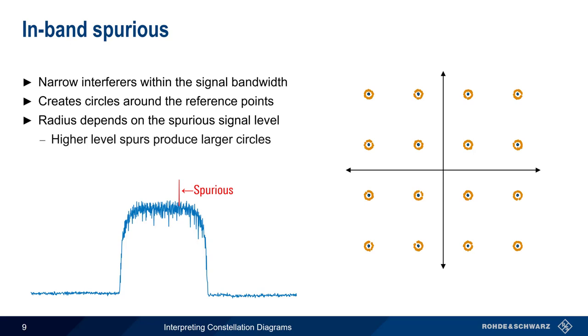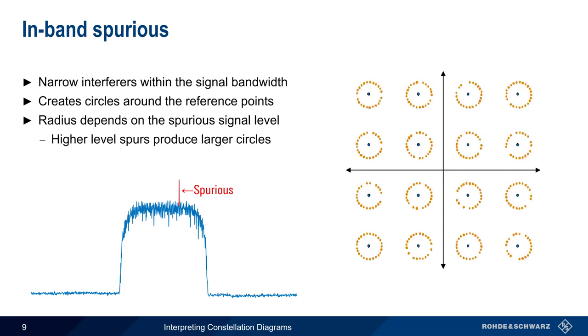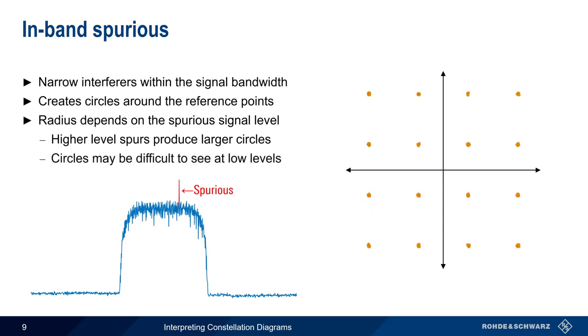As the level of the spurious signal increases, the radius of these circles also increases. Note, however, that in the case of low-level spurs, it may be difficult to see these circles without zooming in to the individual constellation points.